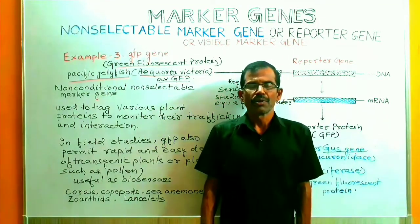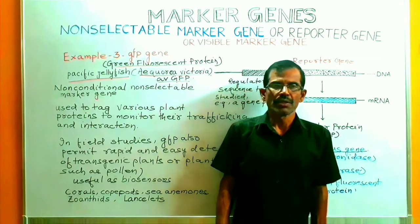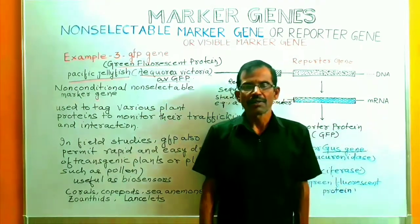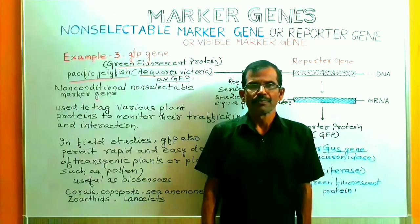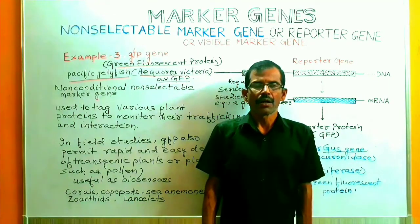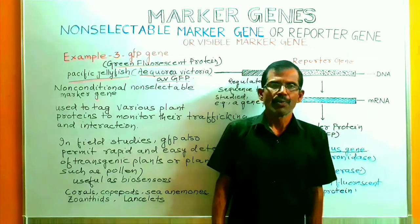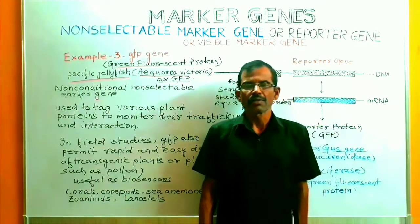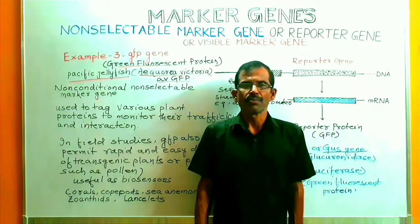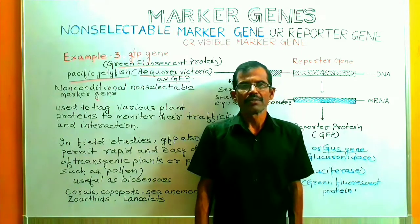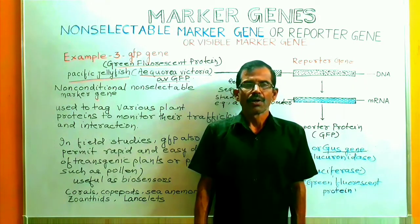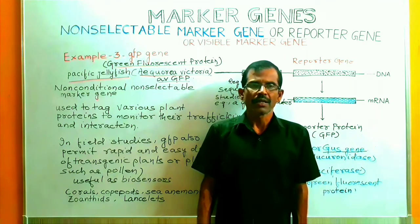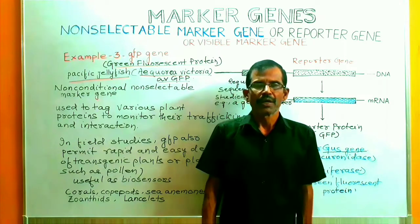This concludes the discussion on various reporter genes like the GUS gene, LUC gene, and GFP gene. The GUS gene and LUC gene are examples of conditional non-selectable marker genes or reporter genes, whereas GFP is an example of a non-conditional non-selectable marker gene or reporter gene.